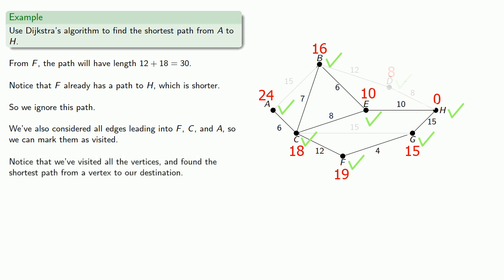Notice that we've visited all the vertices and found the shortest path from a vertex to our destination. So we know that no shorter paths exist, and that the shortest path from A to H has length 24.